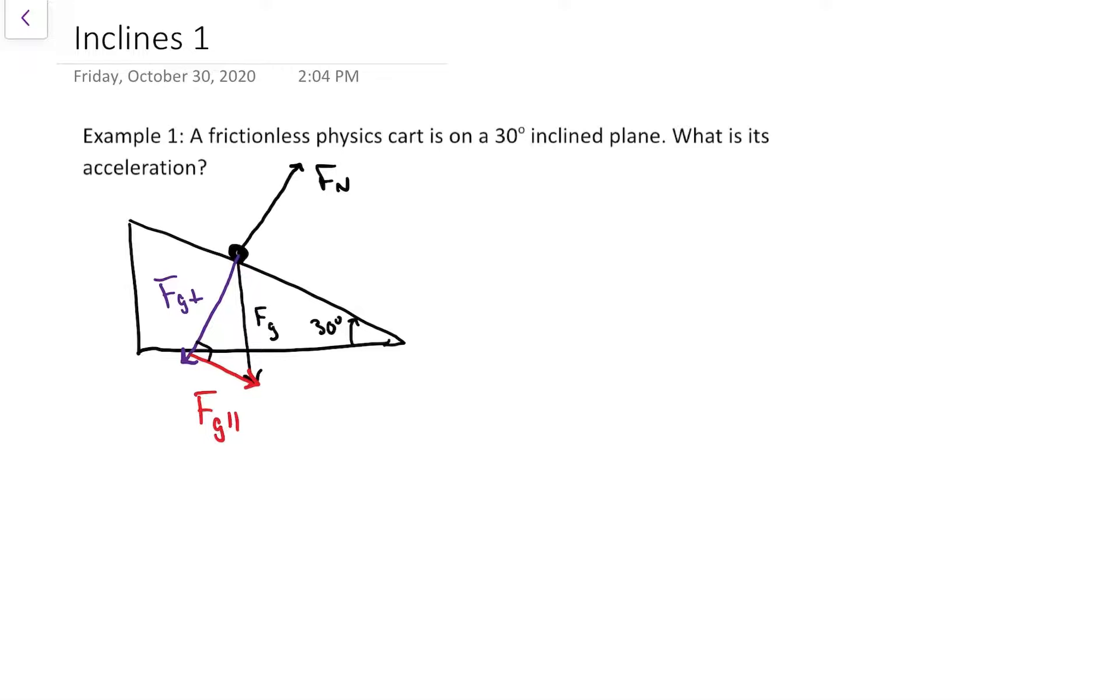What I've drawn in purple, FG perpendicular, that's what triggers the normal force. And what I've drawn in red, FG parallel, that's actually what's pulling it down the hill. Because it's on a 30 degree incline, it's not going to accelerate at the full 9.8; it's going to accelerate lower depending on how big that FG parallel part is.